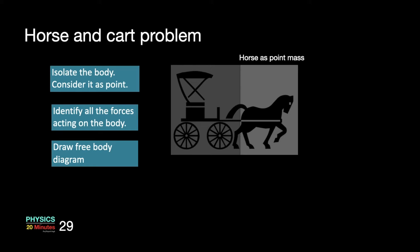Now let's take the horse as the point mass and repeat the same exercise. Assuming that the horse is standing, according to the first strategy the horse is a point mass. Let us identify all the forces acting on the horse: its weight WH works downward, normal reaction from the ground NH works upward, and the tension in the rod connected to the cart works in the rear direction. So this is how the free body diagram of the horse looks when standing.